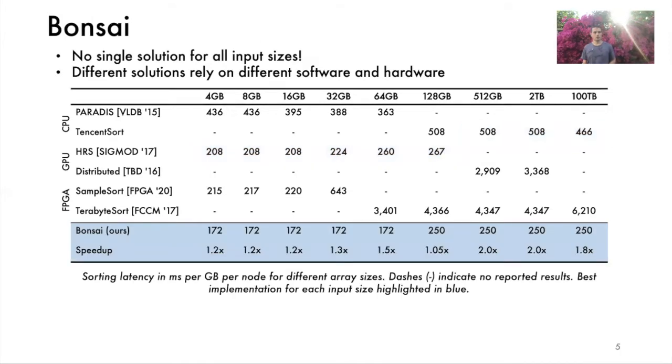To resolve the drawbacks of earlier implementations, we introduced Bonsai, an adaptive FPGA sorter that can use any computational and memory resources optimally. The adaptive architecture allows Bonsai to configure its sorting hardware to work well with any problem size as illustrated in this table. For a 4 to 32 gigabyte array size, Bonsai has a minimum of 2.3x, 1.3x and 1.2x speedup over the best designs on CPU, FPGA and GPU respectively. Let's discuss how Bonsai achieves this.